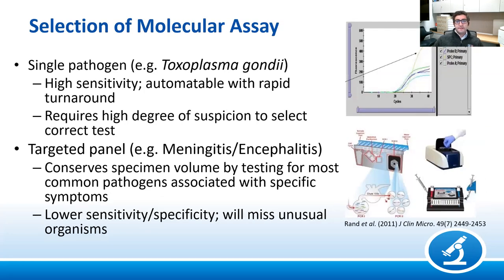There are a number of different types of molecular assays. A single pathogen assay such as targeting Toxoplasma has high sensitivity and can be automated for reporting by a lab technician without pathologist interpretation, but requires a high degree of suspicion to select the correct test. This is an example of an RT-PCR test — and before COVID, people didn't know as much about cycle thresholds and CT values. A positive test is defined by reaching a certain fluorescence level after a certain number of RT-PCR cycles.